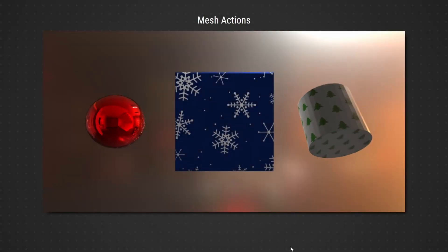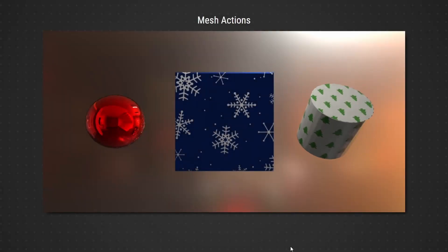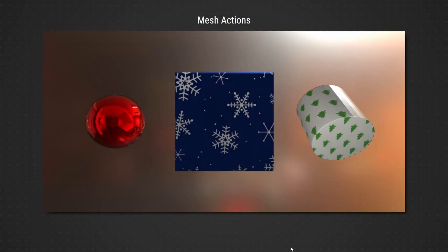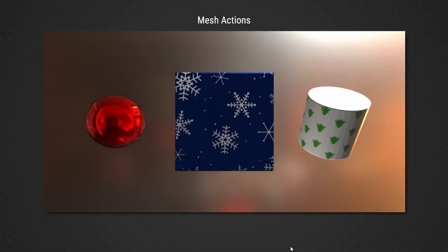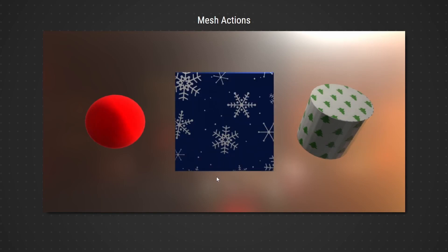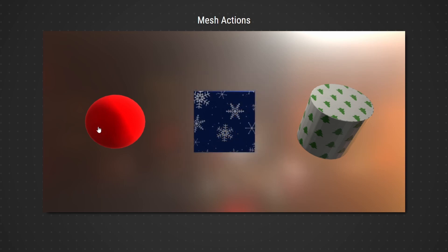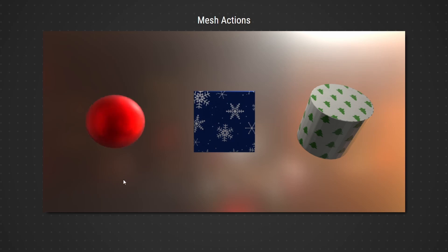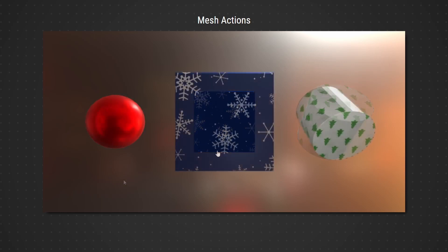In this video, we'll explore basic interactivity with mesh objects using actions. Built-in actions give us the ability to make changes to mesh properties, including rotation, scaling, and even material properties, and more. Actions are a very quick and easy way to add interactive elements to your scene without complex logic.